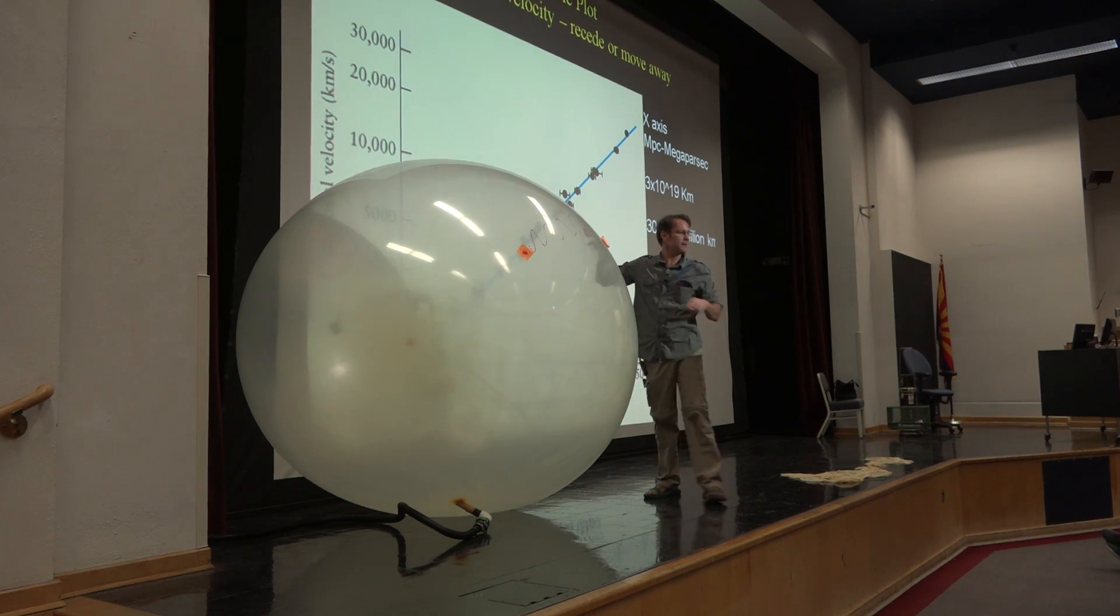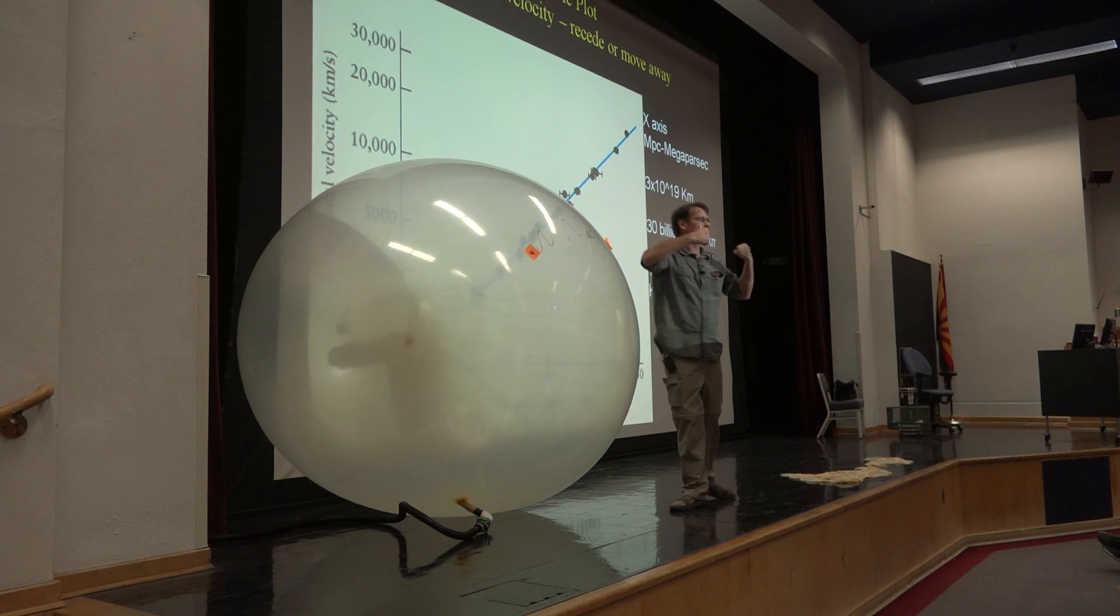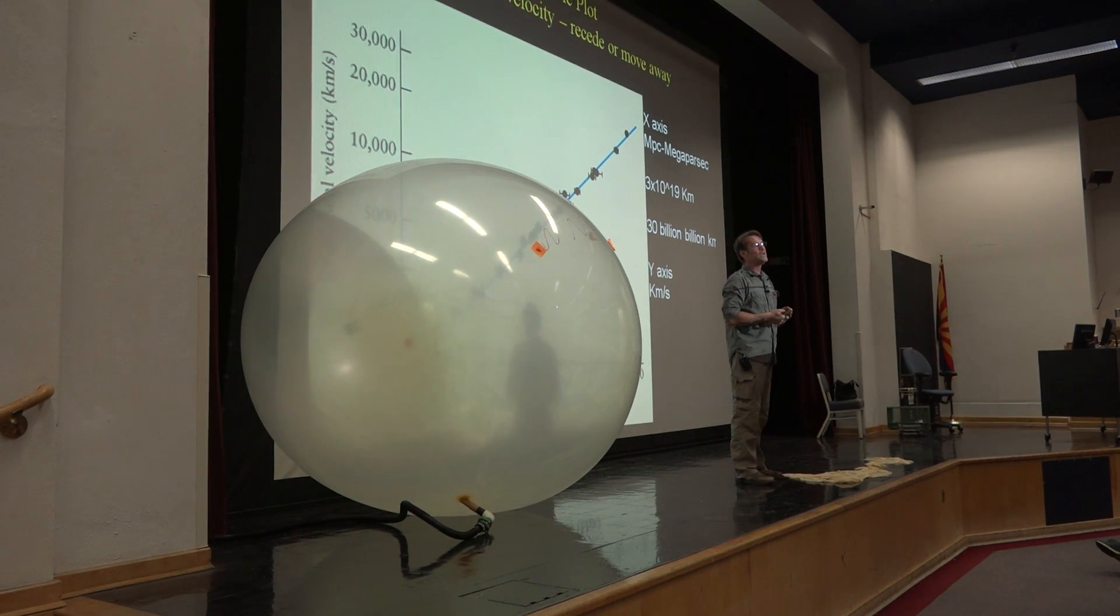Close to us, not much of a redshift or recessional velocity. Far away from us, a long time to stretch out that light, shift it really big towards the red end of the spectrum. Any questions?